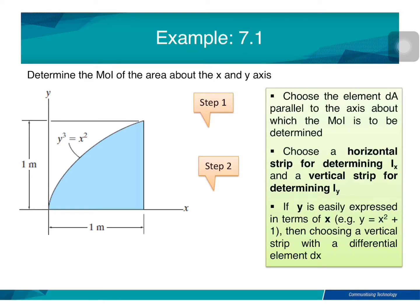Let's do Example 7.1, which determines the moment of inertia of the area about the X and Y axes. You must remember: the first step is if the question wants to determine the moment of inertia IX about X and IY about the Y axis. If we want to determine IX, you must remember that IX is equal to the integration of Y squared DA.